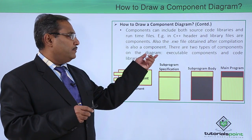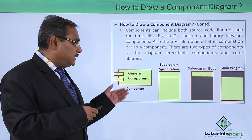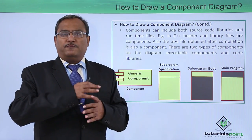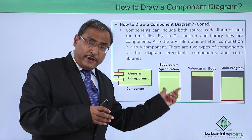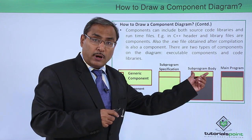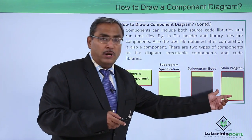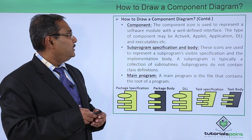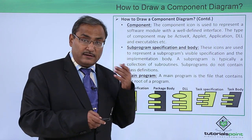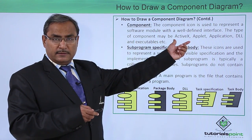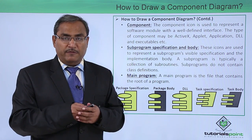There are two types of components on the diagram: executable components (the .exe programs) and code libraries. These are the different notational conventions — they may vary from software to software to some extent, but there is a generic component. This is the subprogram specification, where only the signatures will be written. There is also the subprogram body, where the respective codes are written, possibly in compiled form. This is the main program, the root from where they are going to be accessed. A component icon is used to represent a software module with a well-defined interface. The type of component may be ActiveX, Applet, Application, DLLs, executables, and so on.